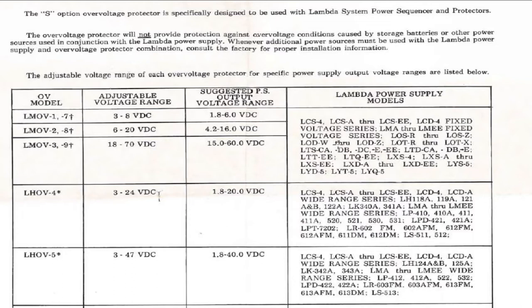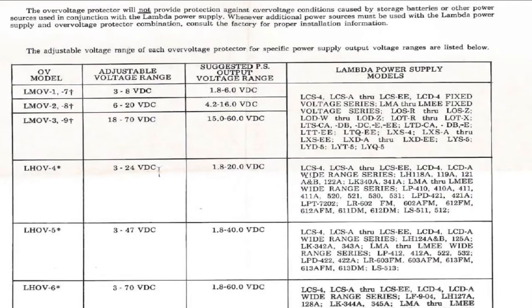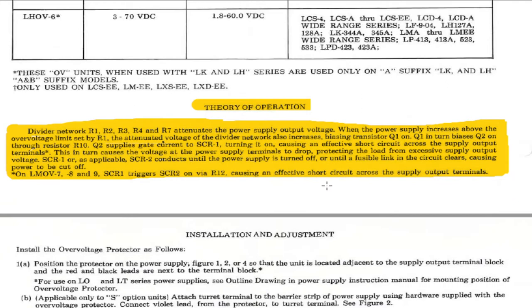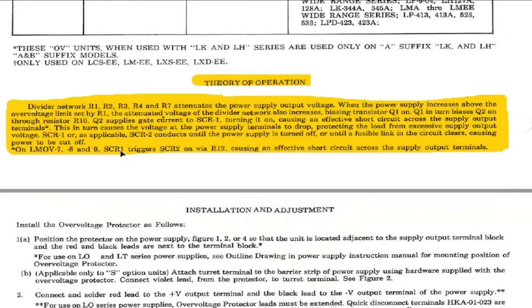As it was decomposing with rust and the capacitors all gone. And here we come down to the theory of operation. What it basically says is it's got a voltage divider which is supplying a voltage to Q1.